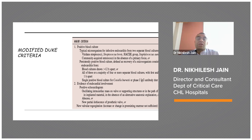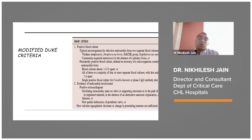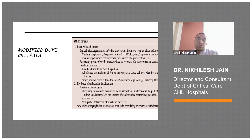And a single positive blood culture for Coxiella burnetii, or a phase 1 IgG antibody titer of 1 to 800. Evidence of endocardial involvement includes a positive echocardiogram documenting an oscillating intracardiac mass on the valve or supporting structures, or in the path of regurgitant jets, or on implanted material in the absence of an alternative anatomic explanation, or an abscess, or a new partial dehiscence of a prosthetic valve, or new onset valvular regurgitation.